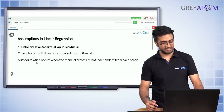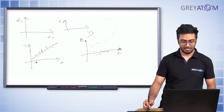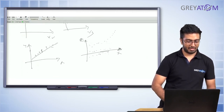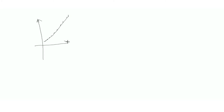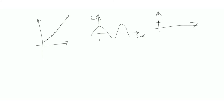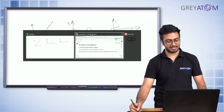The fourth assumption is little or no autocorrelation in the residuals. Autocorrelation means a variable is related to itself — there's a pattern in the data. This assumption says that when you plot the error against the independent variable values, there should be no discernible pattern. The errors should be randomly distributed with no systematic structure.